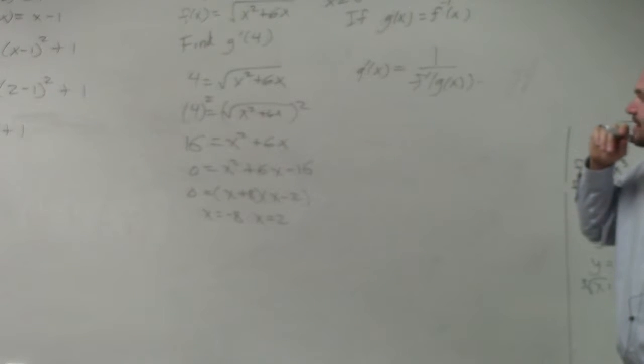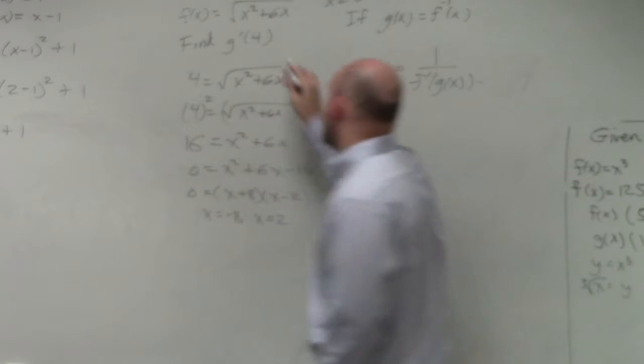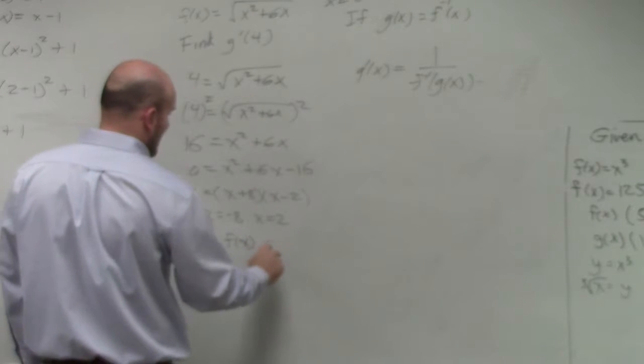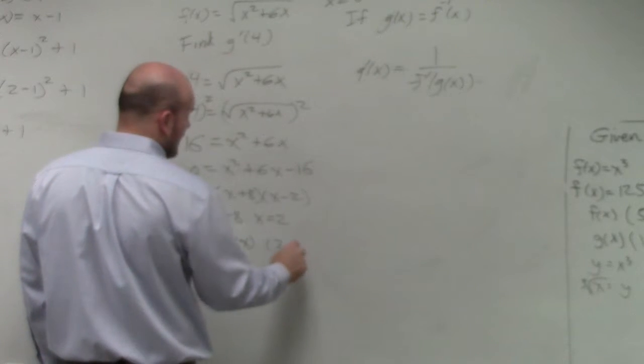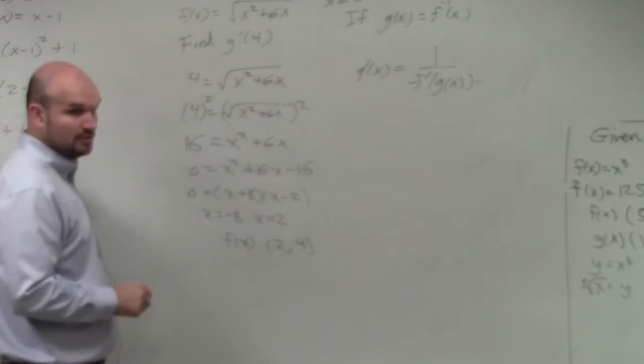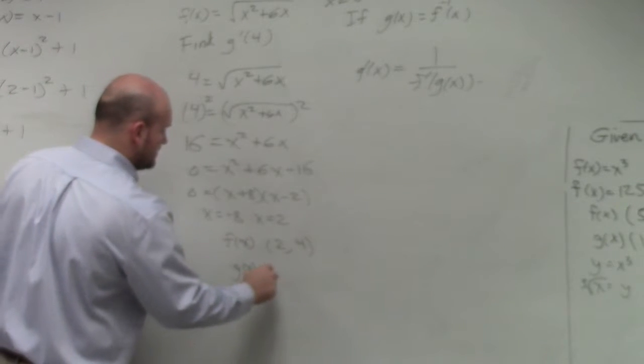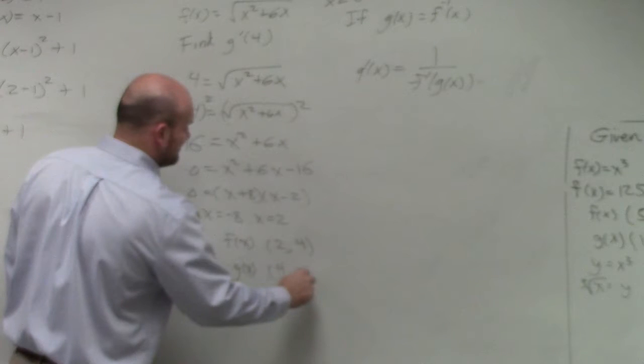So we're finding f prime of 4. So therefore, now we know that of my function f of x, when I have 2, I'm going to get out 4. Correct? So therefore, I can write the summary statement for g of x. My input would be 4 comma 2.